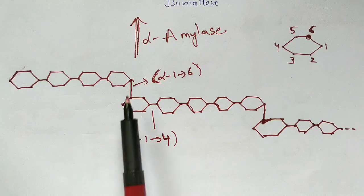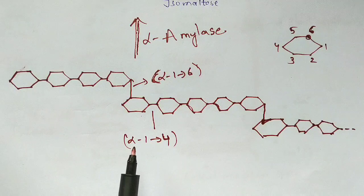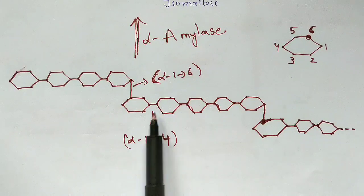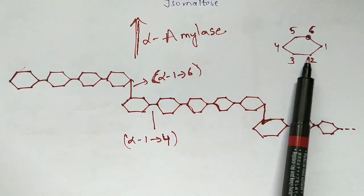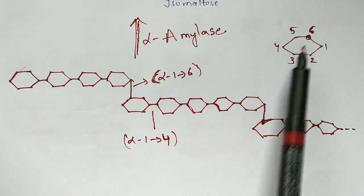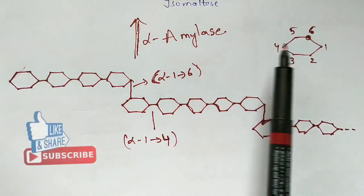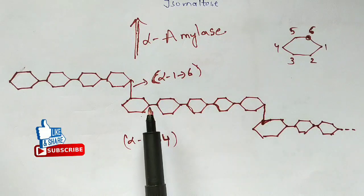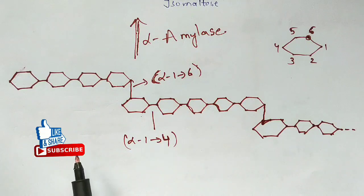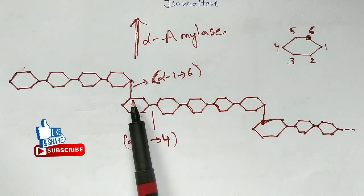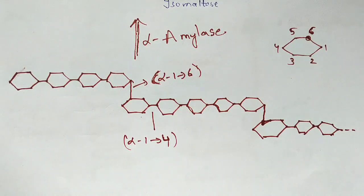Alpha amylase has the capacity of cleaving alpha 1 to 4 glycosidic linkages. A glucose molecule consists of six carbon units. The bond formed between the first carbon and the fourth carbon is called alpha 1 to 4 glycosidic linkage, and the bond between the first carbon and the sixth carbon is called alpha 1 to 6 glycosidic linkage.